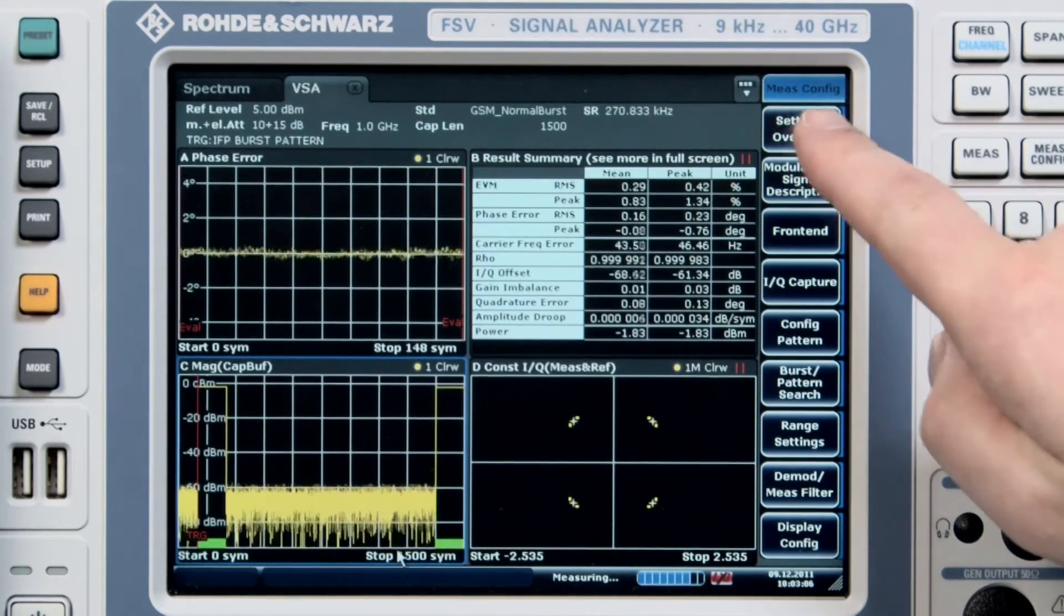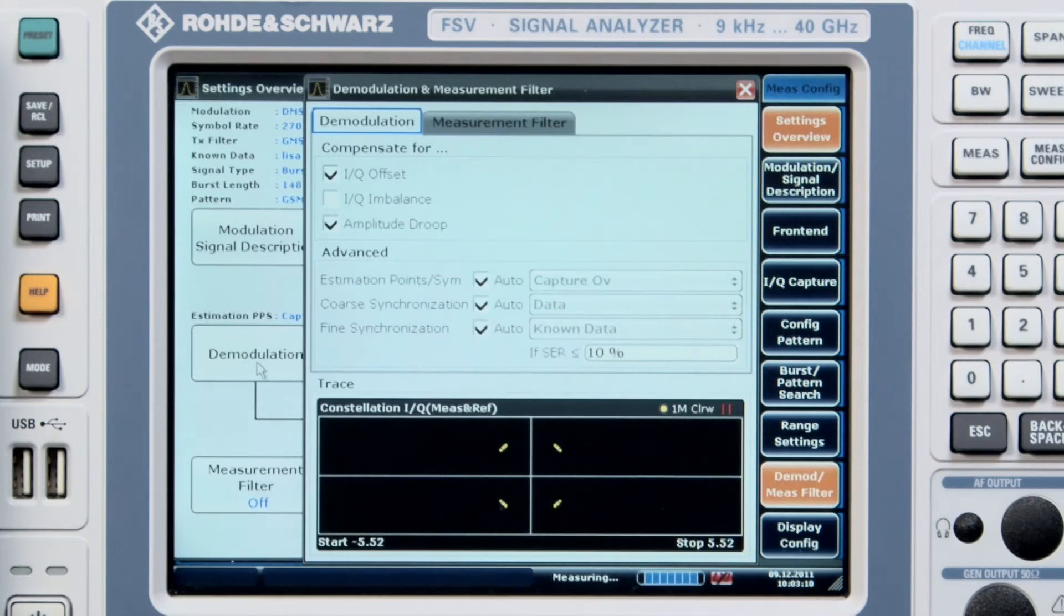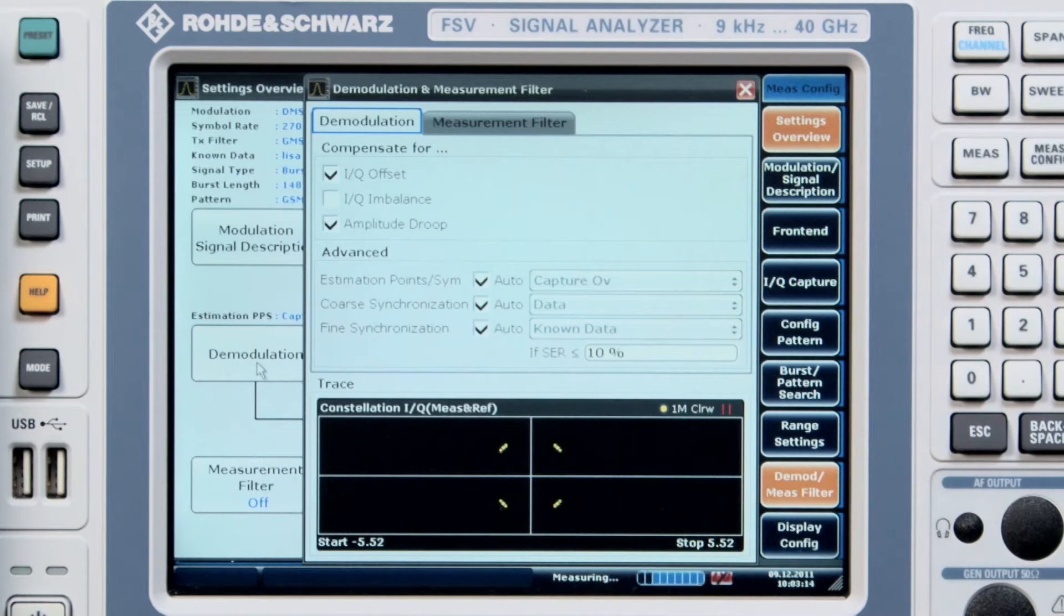Once we've done that, we just need to enable the bit error rate measurement. To do that we go to demodulation under the settings overview tab, and we have a number of points there: estimation points per symbol, coarse synchronization, and fine synchronization.